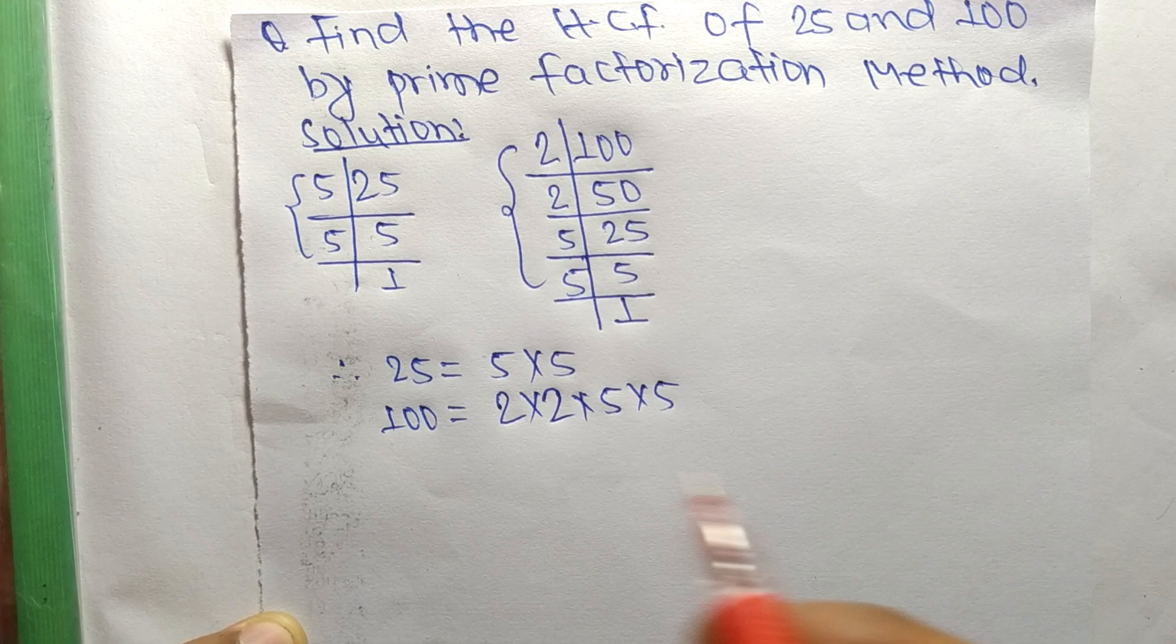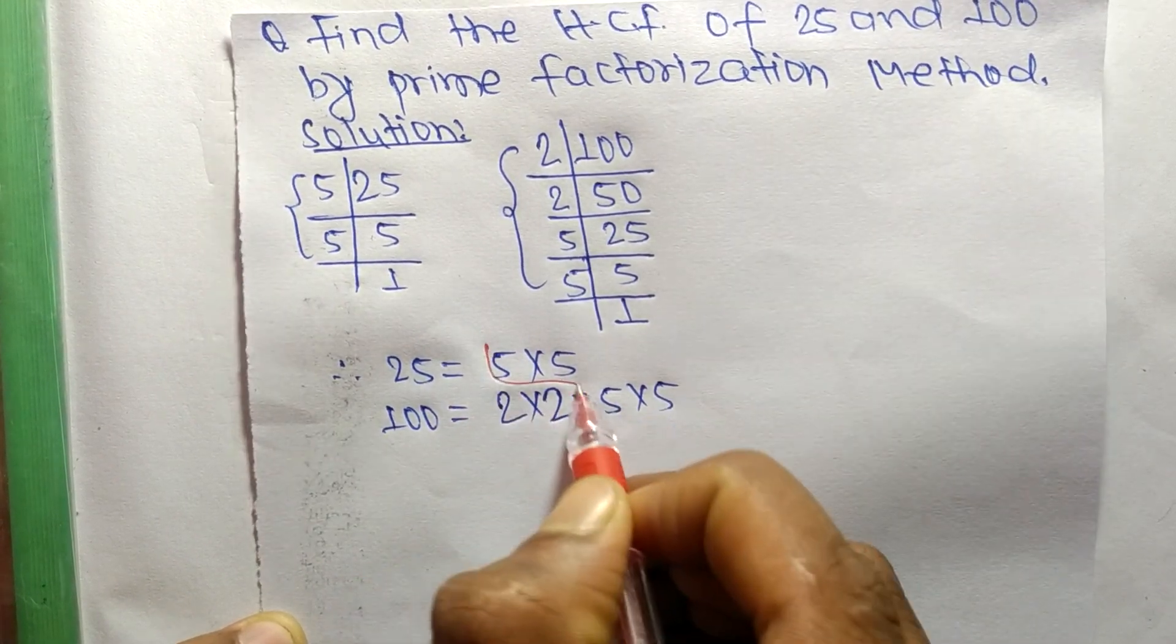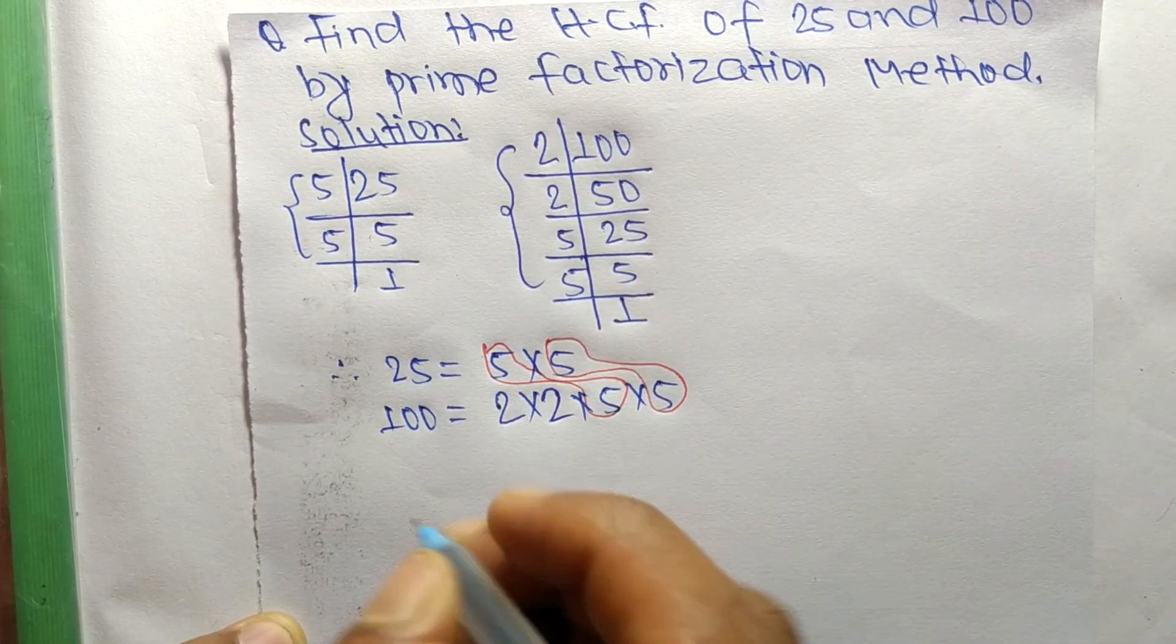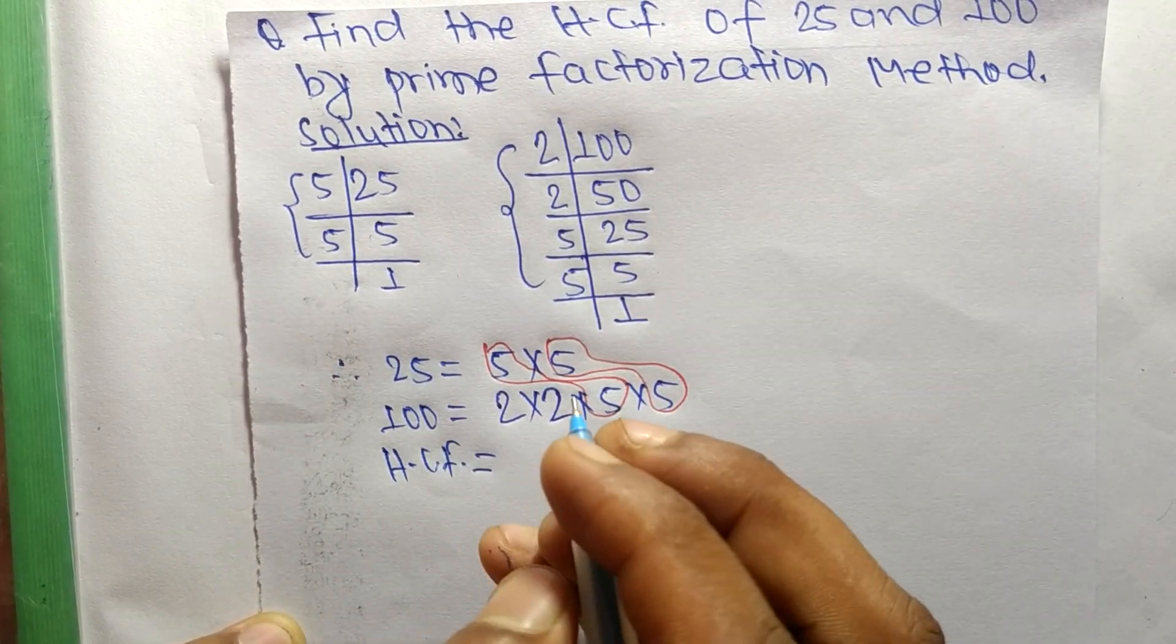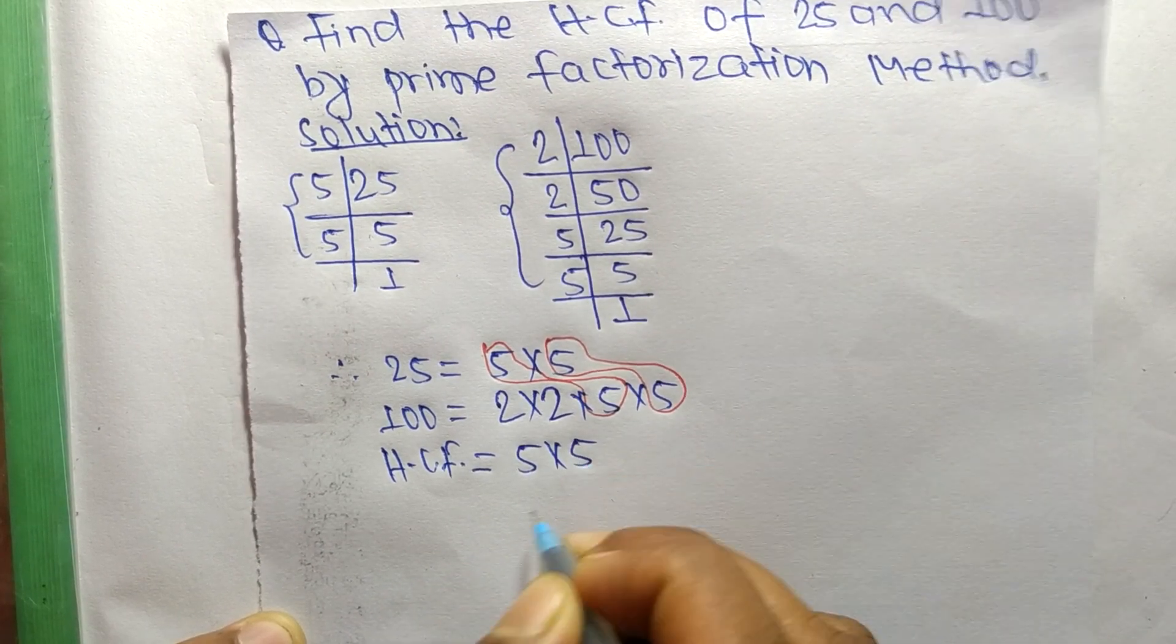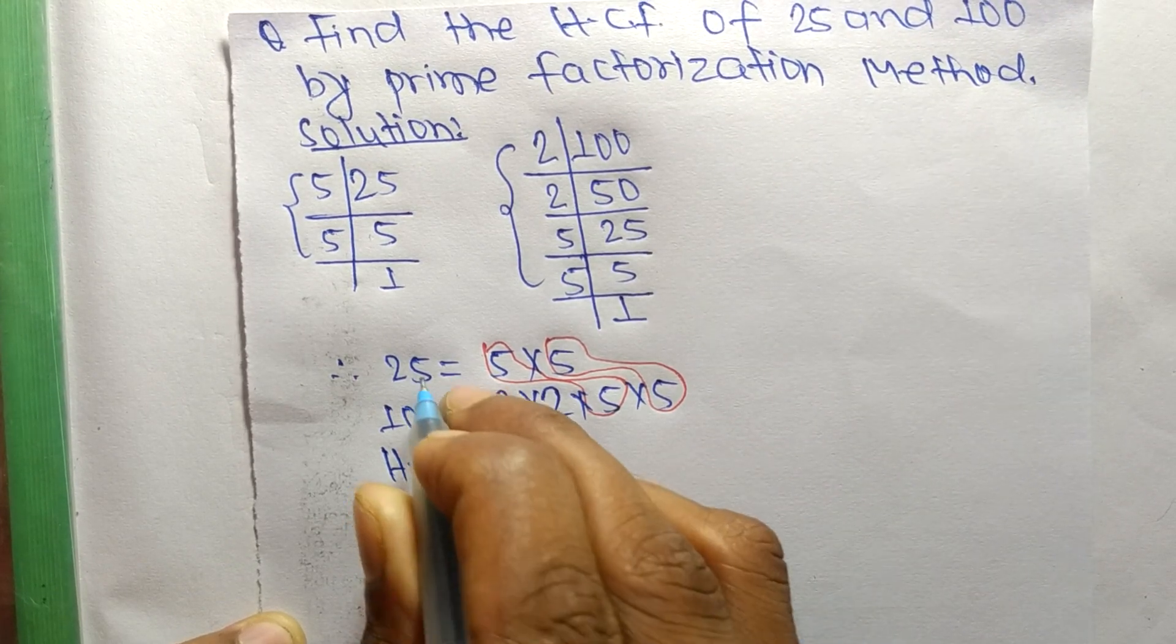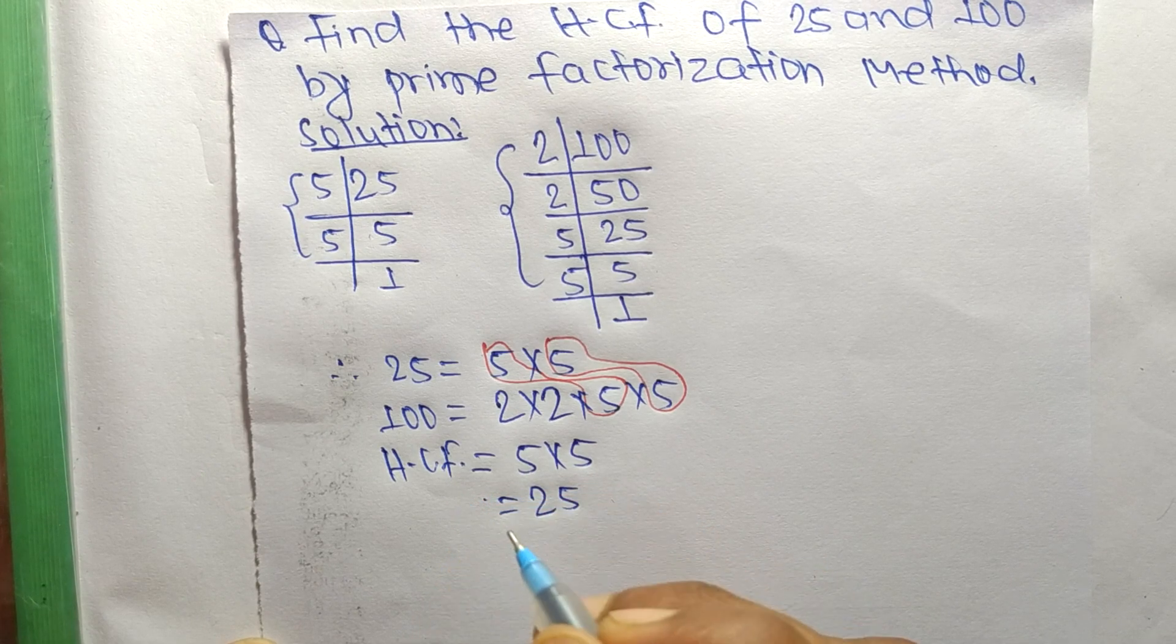Now we find out the common factors in the prime factors of 25 and 100. The first common factor is 5 and the second common is also 5. So the HCF is equal to the common factors of 5 times 5, which equals 25. So 25 is the HCF of 25 and 100. Thanks for watching.